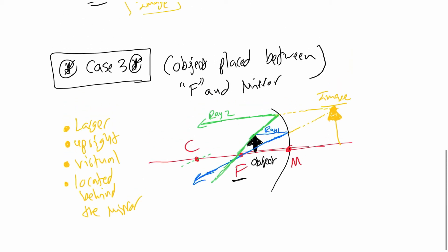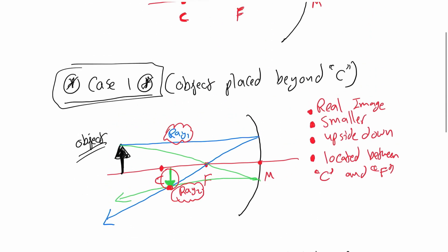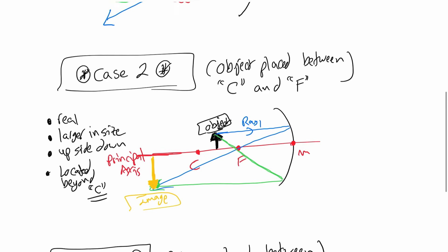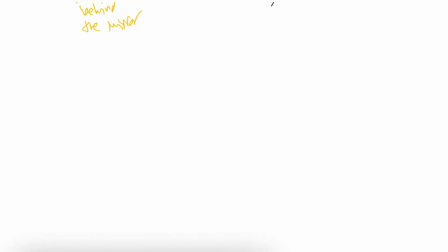These are the three cases. A fourth situation is when the object is placed exactly at the focal point — no image forms, neither virtual nor real. In case one (object beyond C): real image, smaller, upside down, between C and F. In case two (object between C and F): real image, larger, upside down, beyond C. In case three (object between F and mirror): larger image, upright, virtual, behind the mirror.